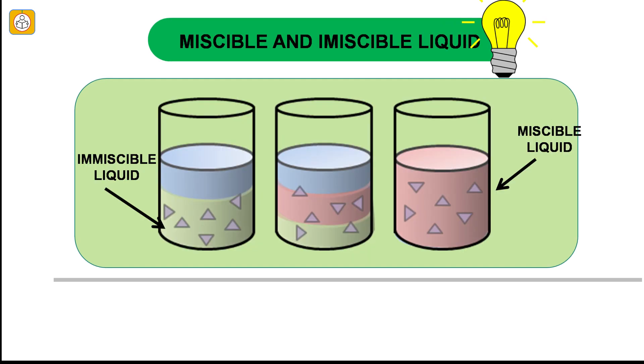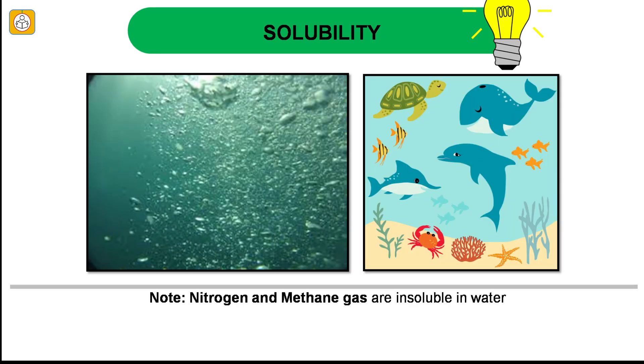Liquids that completely dissolve in each other are called miscible liquids and the ones which do not are called immiscible liquids. For example, vinegar is miscible in water whereas coconut oil is immiscible in water. Some gases are soluble in water whereas others are not. Water usually has small quantities of some gases dissolved in it. For example, oxygen gas dissolved in water is very important for the survival of animals and plants that live in water. Nitrogen and methane gas are insoluble in water.